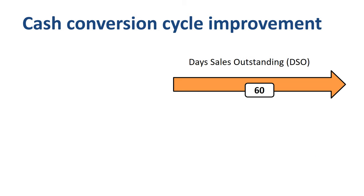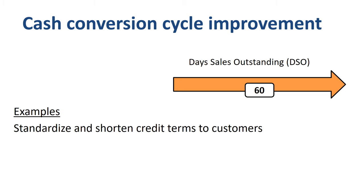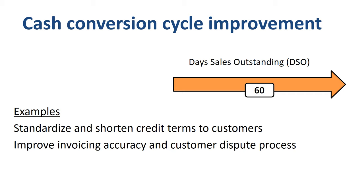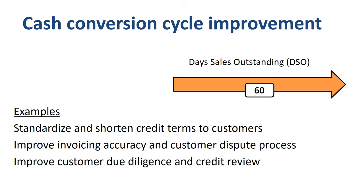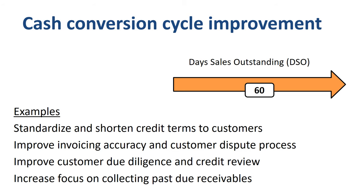The second area to look at to improve the cash conversion cycle and reduce working capital is receivables. Four ideas to lower DSO: standardize and shorten credit terms to customers; improve invoicing accuracy and the customer dispute process; improve customer due diligence and credit review; and increase focus on collecting past-due receivables.